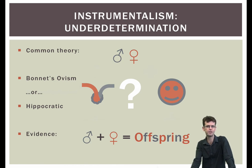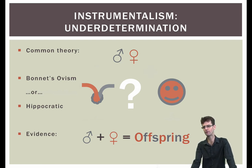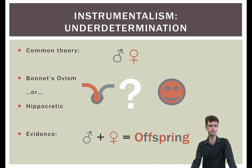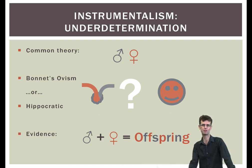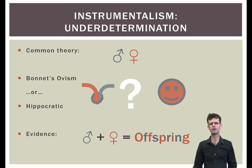It seems we have two theories that do an equally good job of explaining the relevant evidence — that the offspring of a particular male and female tends to inherit traits from each of its parents. Bonnet's ovism says that semen somehow modifies the already preformed foetus. The Hippocratic theory says that each parent contributes seminal fluids and somehow they form into a foetus. The underdetermination argument says that since the evidence cannot be used to determine which theory is correct, we are free to choose either, and so we should be instrumentalists about which one is correct. Another famous example of this argument can be found in Andreas Osiander's foreword to Copernicus's De Revolutionibus.